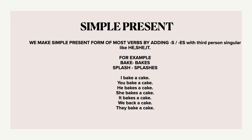Simple present. We make the simple present form of most verbs by adding 's' or 'es' with the third person singular, like he, she, it. For example, 'bake' becomes 'bakes', and 'splash' becomes 'splashes'. If you see in simple present, for all the nouns — first person singular, second person singular, or third person singular — we see how these verbs are used.